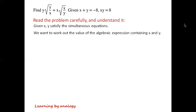Given x and y satisfy the simultaneous equations, we want to work out the value of the algebraic expression containing x and y. Because xy equals 8, x and y must have the same sign. Because x plus y equals minus 8, x is less than 0, and therefore y is also less than 0.